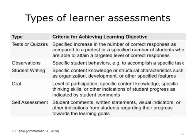Tests or quizzes: The criteria for achieving the learning objective may include a specified increase in the number of correct responses compared to a pre-test, or a specified number of students who attain a targeted level of correct responses. Observation of student performance: The criteria could include specific student behaviors, for example, to accomplish a specific task. Student writing: Criteria may include specific content knowledge or structural characteristics such as organization, development, or other specified features. Student talking: The criteria may include the level of participation, specific content knowledge, specific thinking skills, or other indications of student progress as indicated by student comments. Self-assessment: You may ask students to assess their own learning. Possible criteria would include student comments, written statements, visual indicators, or other indications from students regarding their progress towards the learning goals.